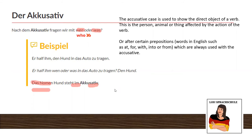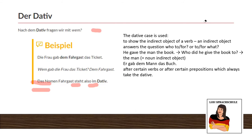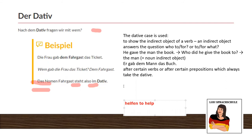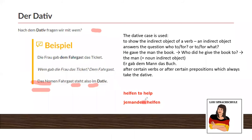As for Dativ, it is an indirect object that answers the question 'who is it for?' or 'who does it go to?' I can only recommend you: A, don't panic, and B, learn it always by heart when you learn a new pattern or new vocabulary. For example, during your studies you learn the verb 'helfen' — to help. The best thing you can do is not to learn it just like that. Check your dictionary, and most of the time there is information about how to use it. 'Jemandem helfen' — to help somebody. You see immediately because of the -m ending, this is dative.